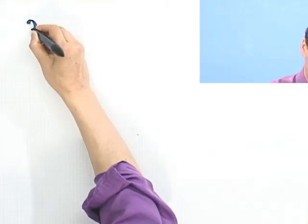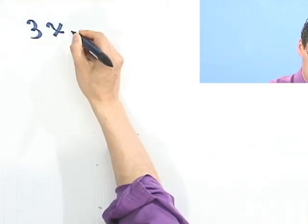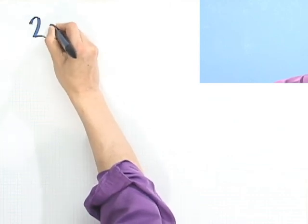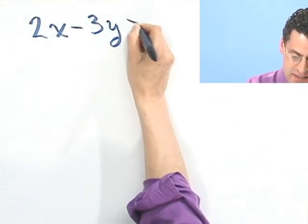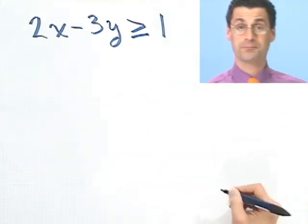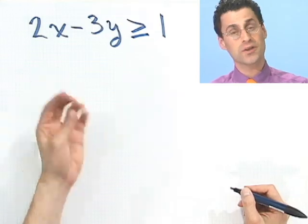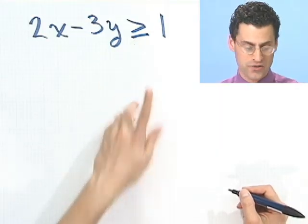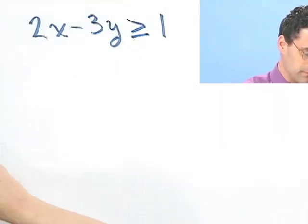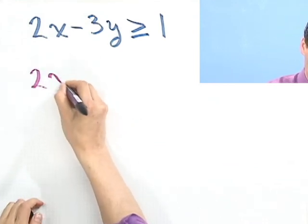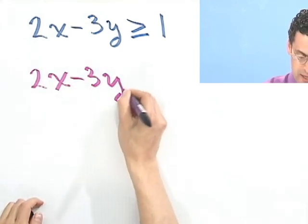So let's graph the following: 2x minus 3y, and let's say that's greater than or equal to 1. Now, how would you graph this kind of inequality? Well, the first thing I would do would be to consider the auxiliary object going on in the background, which would be what I would have if I had an equal sign there. So I'd first do a warm-up problem. The warm-up problem I would consider would be 2x minus 3y equals 1.